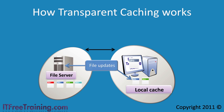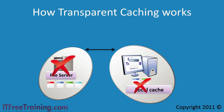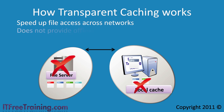If the server were to go offline, any cached file is no longer available. This is what makes it different from offline files. Transparent caching's job is to speed up file access across available file shares, not provide access to data when disconnected from the network.